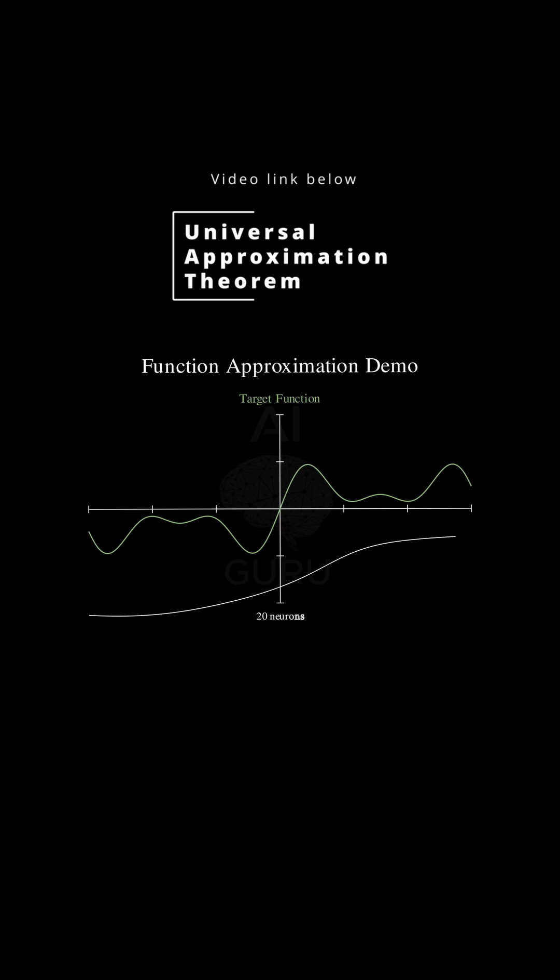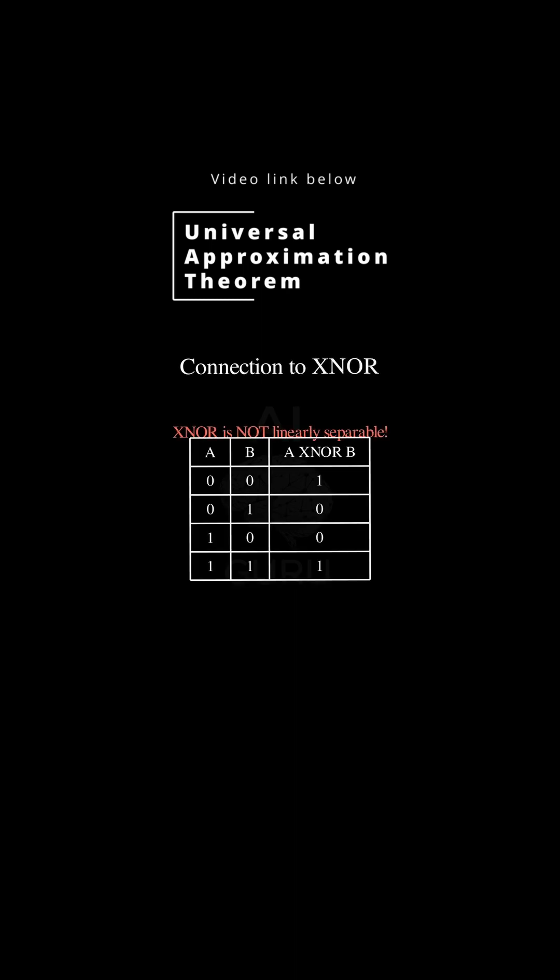It's the theoretical bedrock of why deep learning is so powerful. It was proven by George Cybenko, and it states that a neural network with just one hidden layer, as long as it has enough neurons, can approximate any bounded and continuous function. Any function.